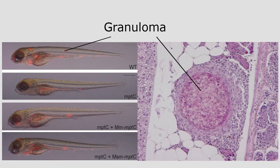So why do we use zebrafish? The disease in zebrafish is similar to that in humans — they both develop granulomas. The advantage of the zebrafish is that you can see through them; they're transparent, so you can actually see the granulomas form.